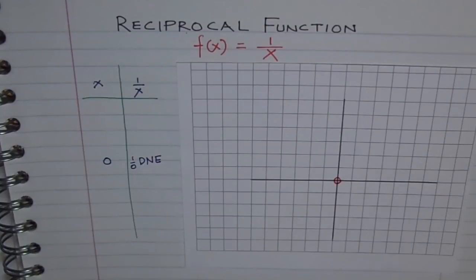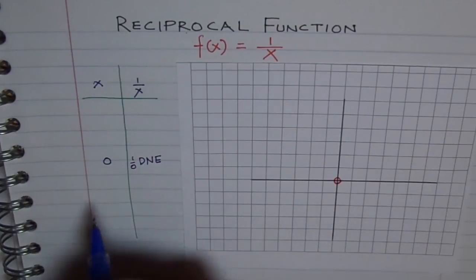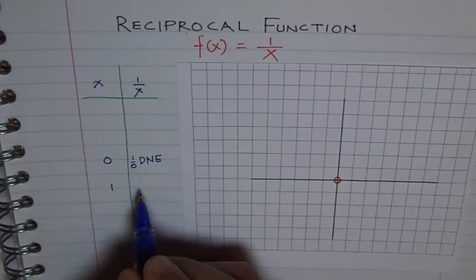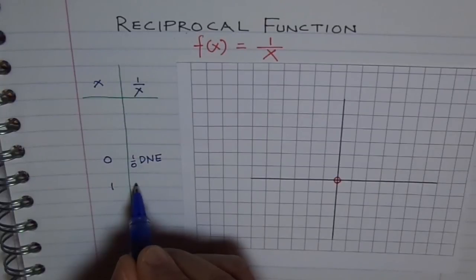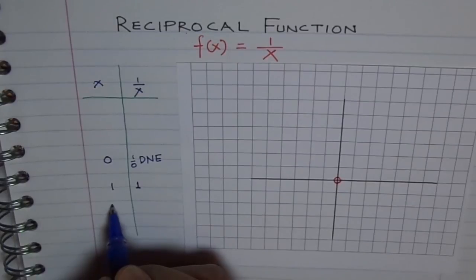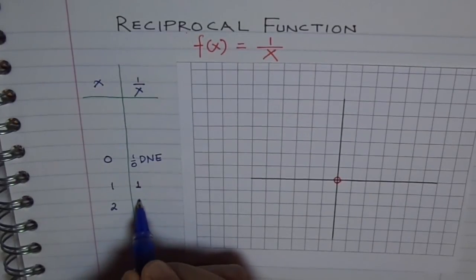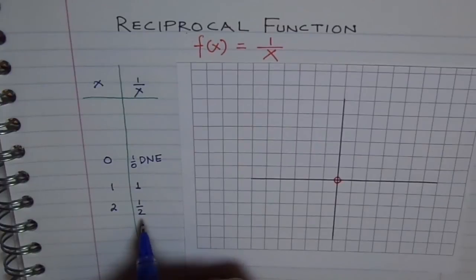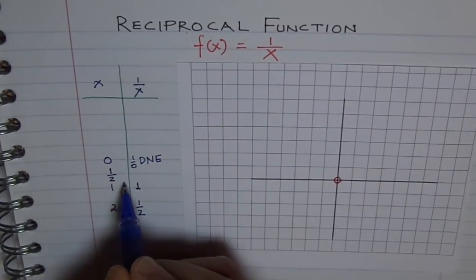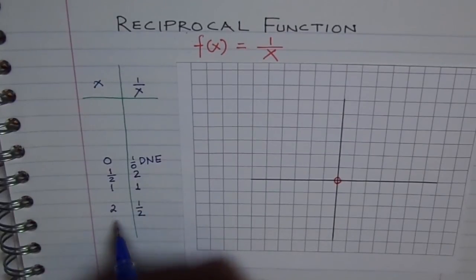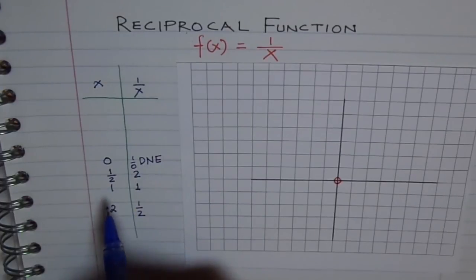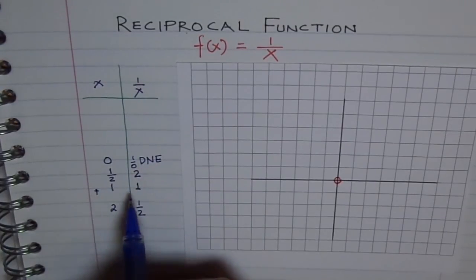Now let's consider other values — let's take some positive values first. If we take positive value 1, then 1 over 1 is 1. If we take 2, then 1 over 2 is one half. How about one half? If we take one half, the reciprocal of one half is 2. So these are good positive values to take. You will see that the reciprocal of a positive number is always positive.